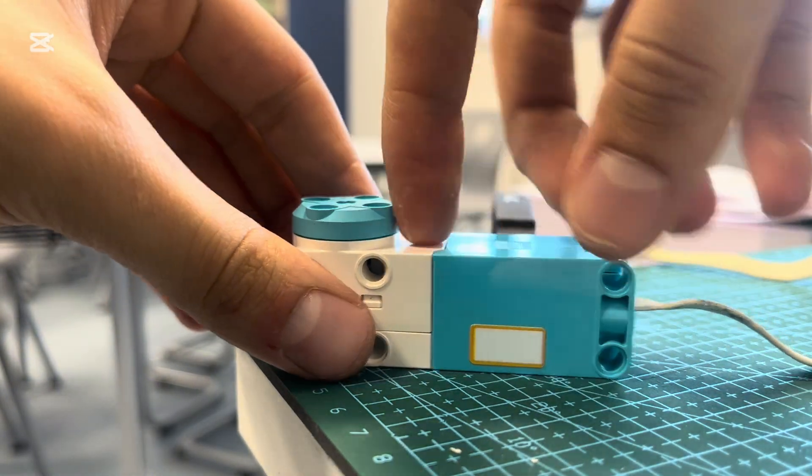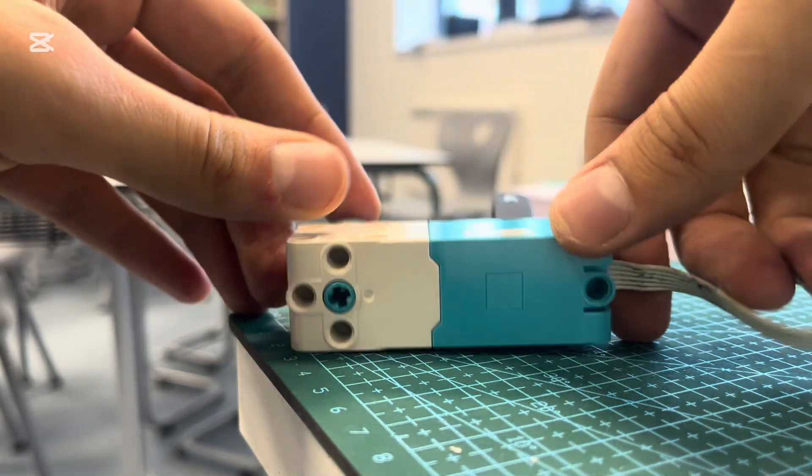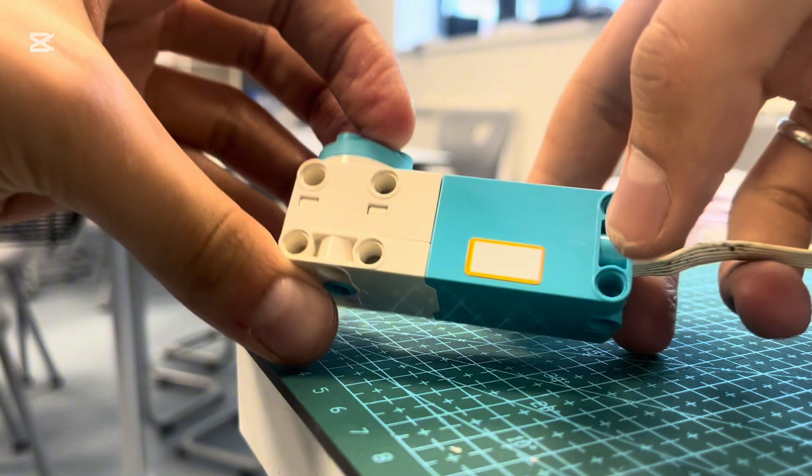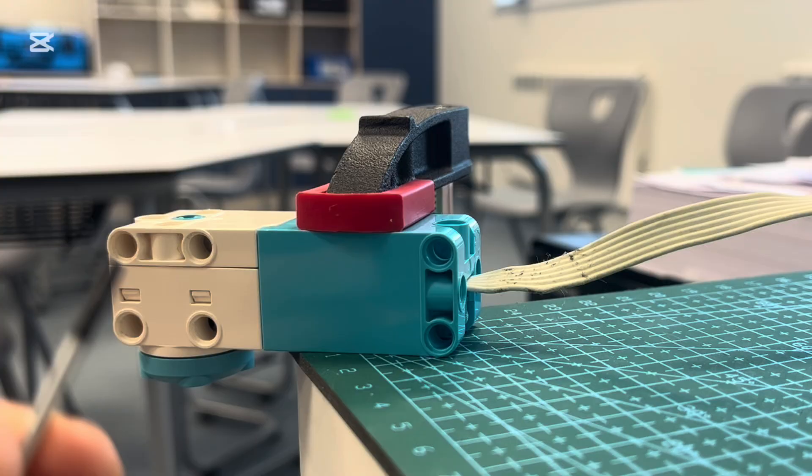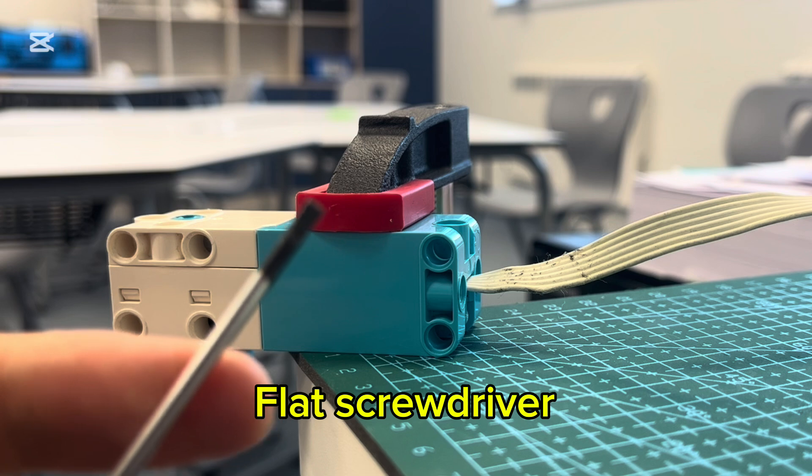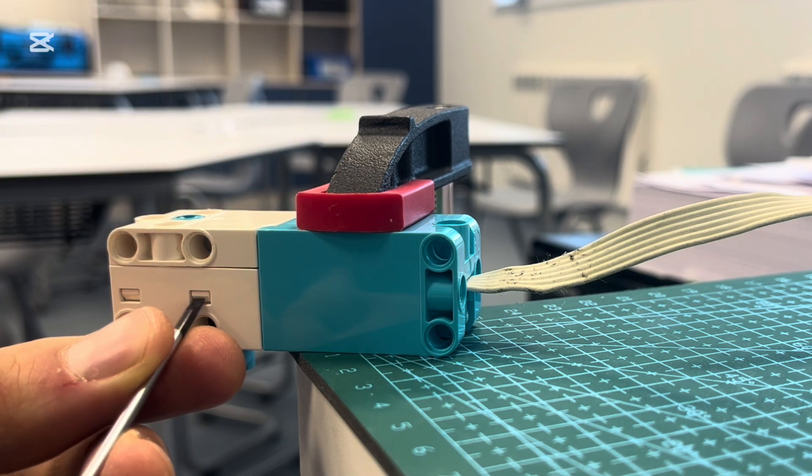So I just need to open it now and solder the new wire to the same motor. First thing we need to take off is the top lid. I just use a regular screw, a small one, and push each of the connectors here.